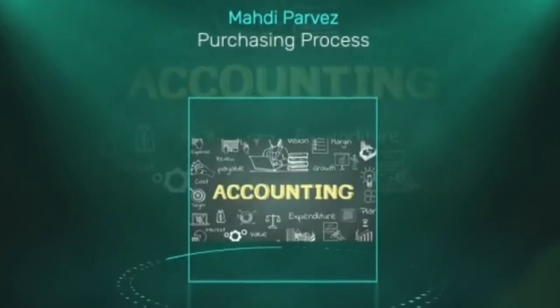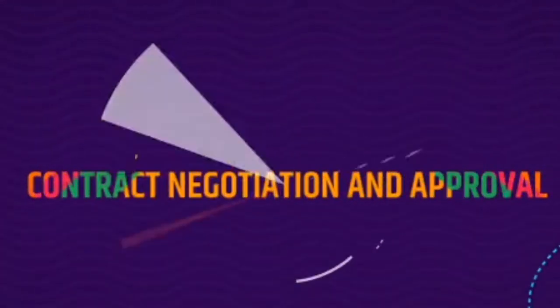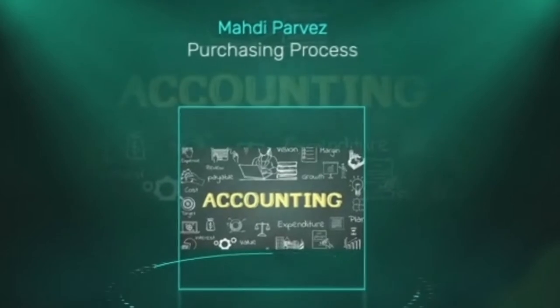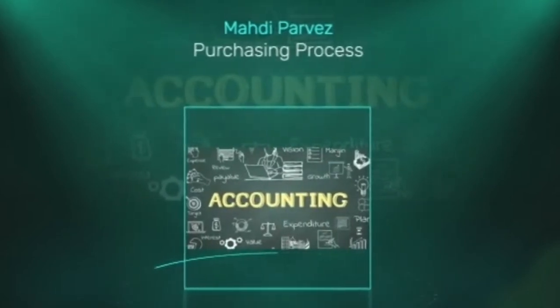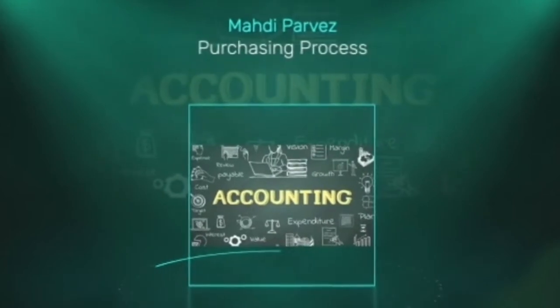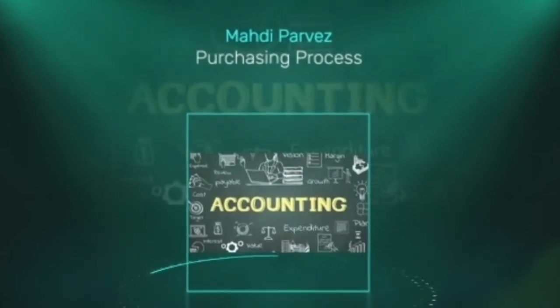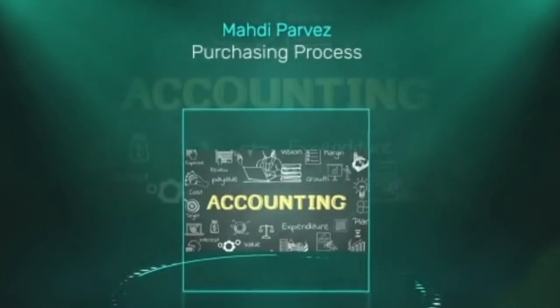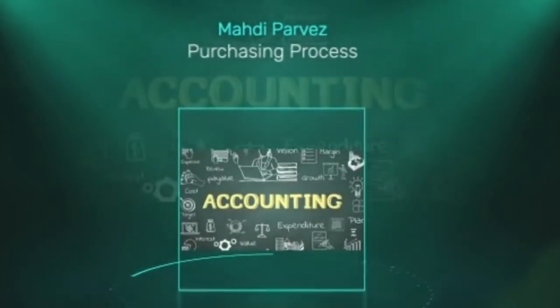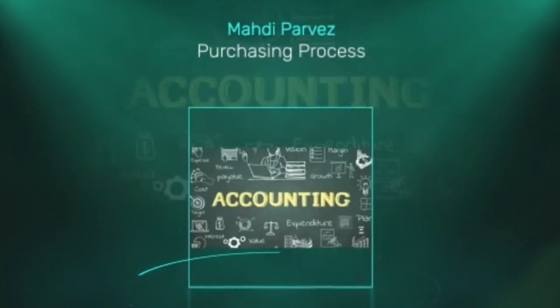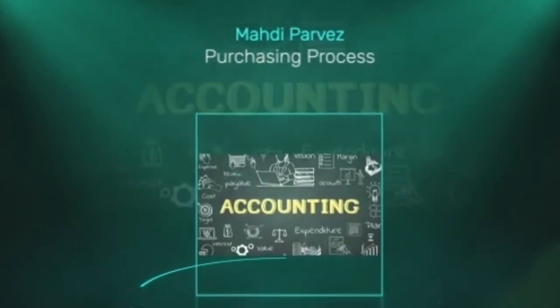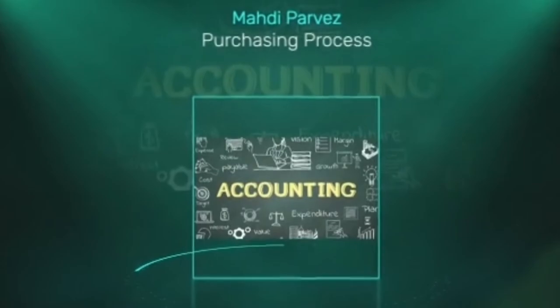The fourth stage is contract negotiation, approval, and shipping and receiving. Once the contract is signed, the purchase order is a legally binding agreement between the buyer and the seller. The supplier delivers the goods or services within the agreed-upon time frame. Once goods are received or services are performed, the purchaser carefully reviews them to ensure they received what was promised and notifies the vendor of any issues.